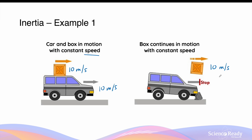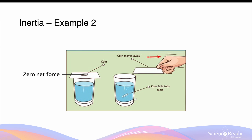In simpler words, there are no forces stopping the motion of this box, which is why what you'll see is that the box is flung forward when the car comes to a sudden stop. This is a very common example of inertia in action.